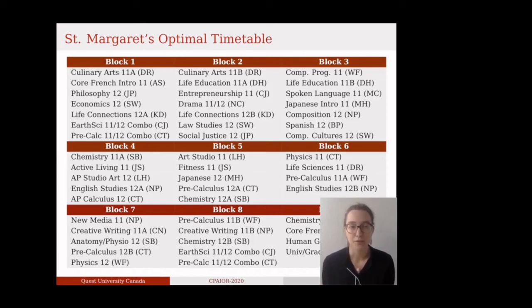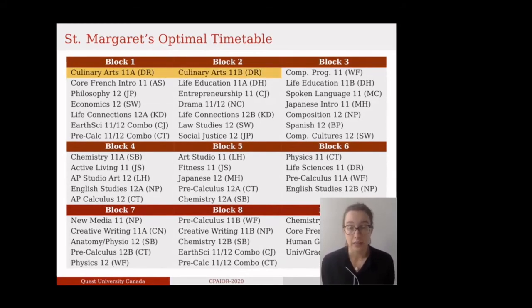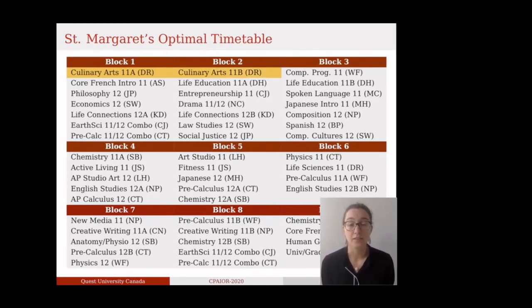Our goal was to construct the optimal senior timetable that allocates courses to the nine pre-established blocks, as shown in the slide. Here, course names are followed by the student grade, 11 or 12, and by the teacher's initials, which appear in parentheses. Some courses are sought by many students, and so multiple sections of the course are offered. This is why some courses appear twice in the timetable, such as Culinary Arts 11A and 11B. The rest are specialized courses that attract only a small number of students, and so only a single section appears.